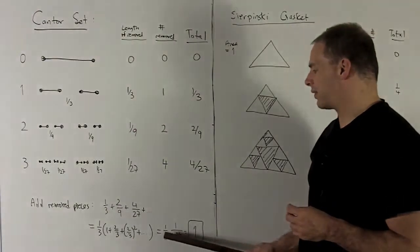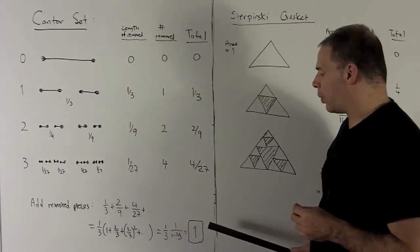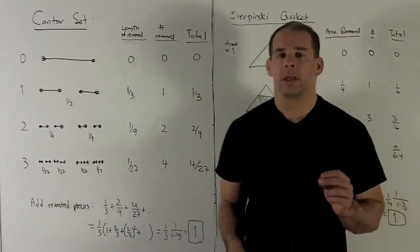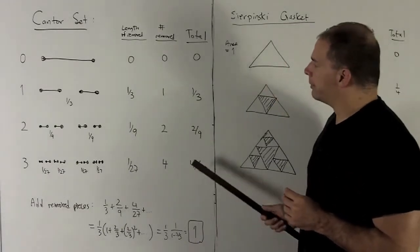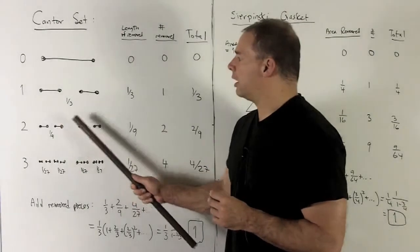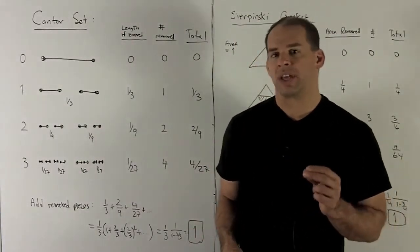So a one third in the bottom—it hits that three and that becomes a one. Now what did we just do? I just removed all of these segments in here.